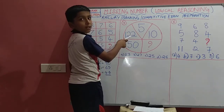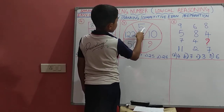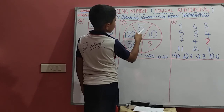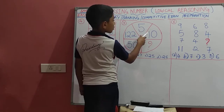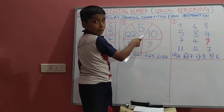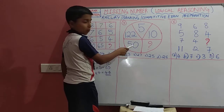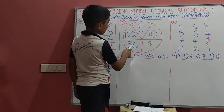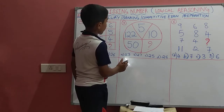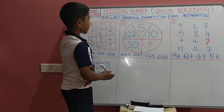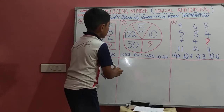Seeing this number, we can say that it will be squares. 2 squared is 4, plus 1 is 5. And 3 squared is 9, plus 1 is 10. And 7 squared is 49, plus 1 is 50. So the logic is: squares plus 1.